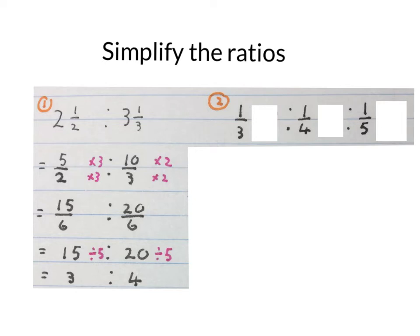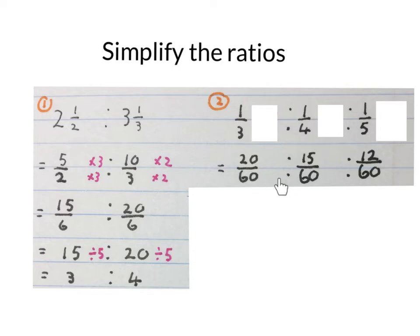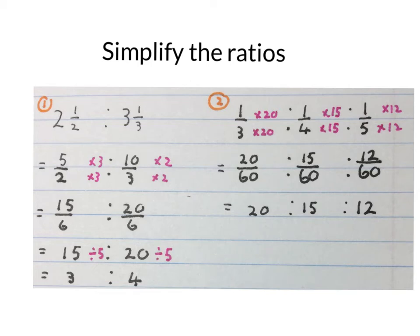Now let's simplify the ratio a third to a quarter to a fifth. Find the LCD of 3, 4 and 5 which is 60. Then using equivalent fractions we convert all three of them to 60ths. Then the simplified ratio will be 20 to 15 to 12.